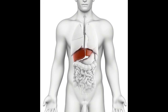A hypoechoic breast mass may be benign, as in the case of a non-cancerous tumor called fibroadenoma. This appears on ultrasound scan as a hypoechoic mass with smooth edges. Fibroadenoma masses are common in young women and may sometimes disappear by themselves.